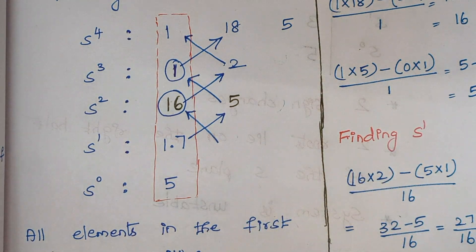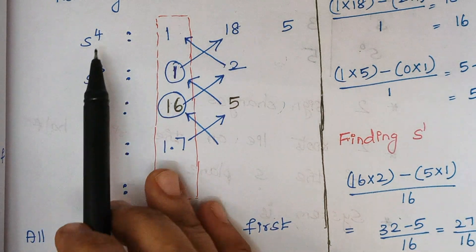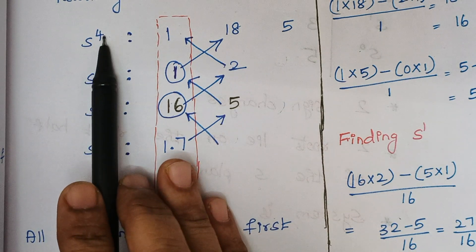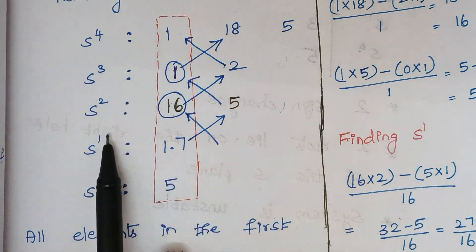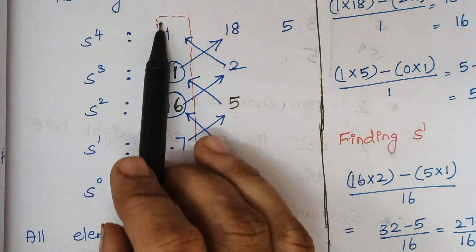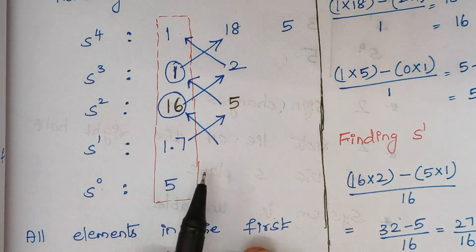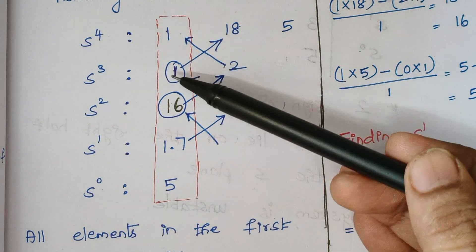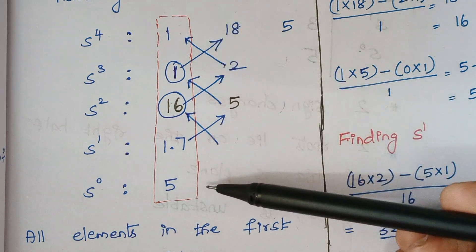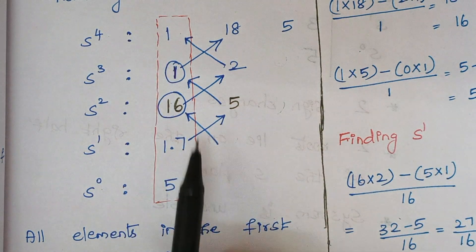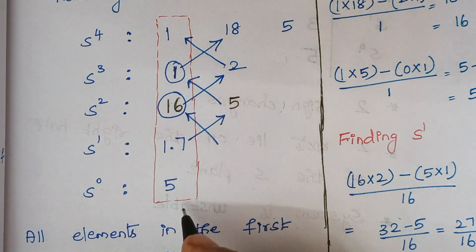After forming this Routh array, we look at the first column. Whatever the highest power of the characteristic equation, you must continue until you reach S⁰. When you look at the first column — 1, 1, 16, 1.7, and 5 — all elements are positive with no sign change. Whenever the first column has all positive elements, the system is said to be stable.